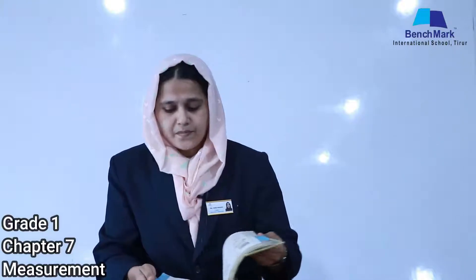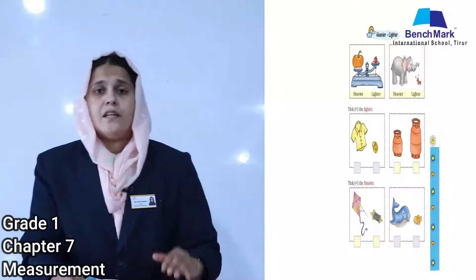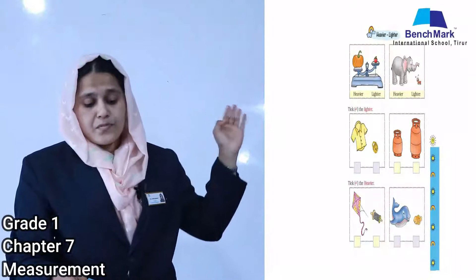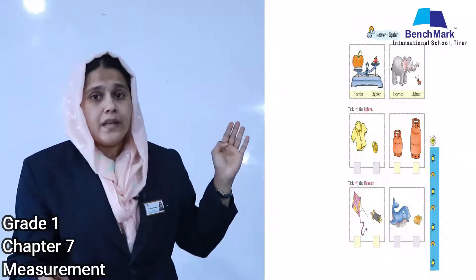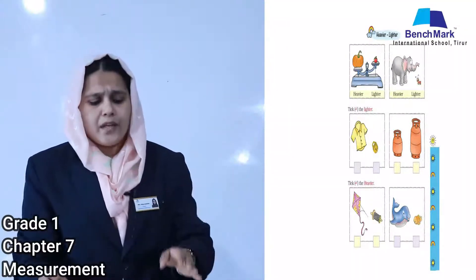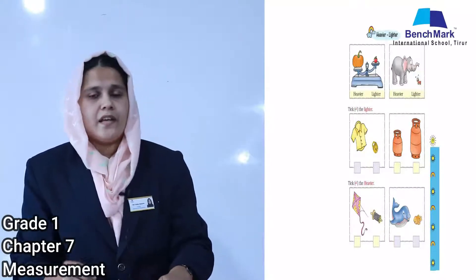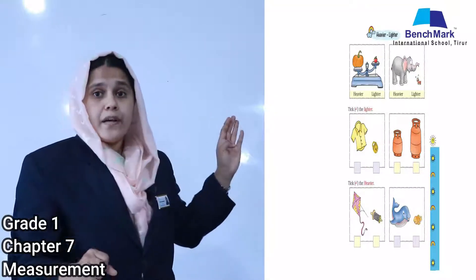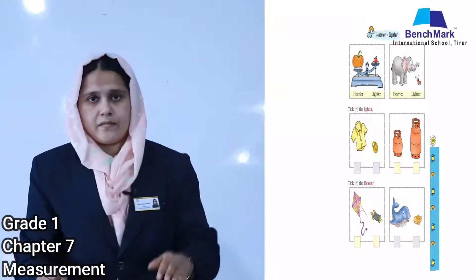Turn to your textbook page number 99. They have given a watermelon and a papaya — can you tell me which one is lighter? Yes, the papaya is lighter than the watermelon. The next question asks you to tick the heavier one — compare the weight of the objects and tick the heavier one.